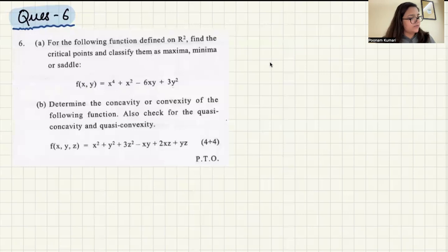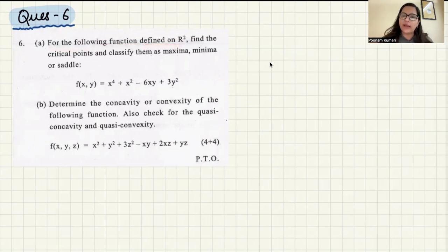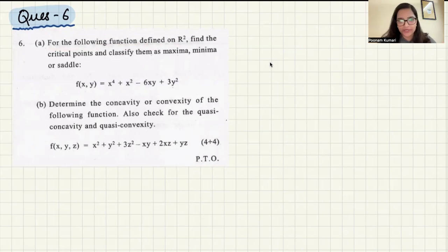The question goes like this: for the following function, which is defined on R², find the critical points. You have to classify them as maxima, minima, or saddle point. So basically, you have to figure out the stationary points, and then say whether it's a local max, a local min, or a saddle point.